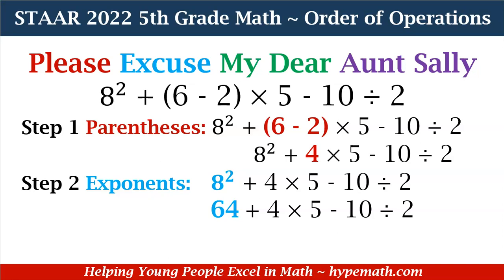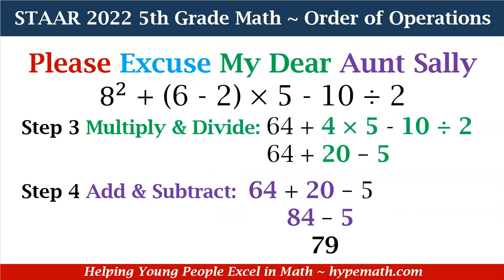So our expression is now 64 plus 4 times 5 minus 10 divided by 2. Step 3, we have multiplication and division. We have 4 times 5, and it's only because in order from left to right we run into 4 times 5 first, and then 10 divided by 2. 4 times 5 is 20. 10 divided by 2 is 5. So our expression now reads 64 plus 20 minus 5.